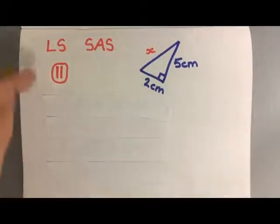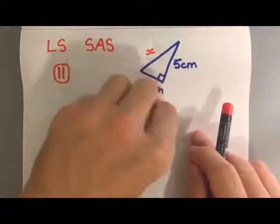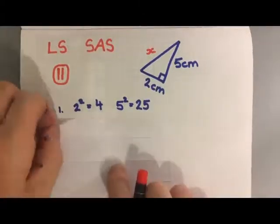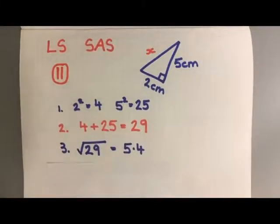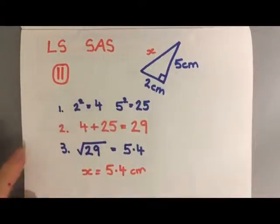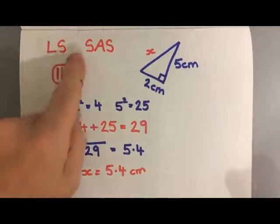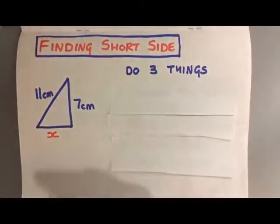Good, you're back. So long side: square, add, square root. First thing we had to do was square 2, that gave us 4. Square 5, that gives us 25. Second thing we have to do: add those two things together. 4 plus 25 is 29. Then we had to find the square root of 29, which is 5.4. So x equals 5.4 centimeters. That's how easy it is to find the long side. You square, you add, you square root.